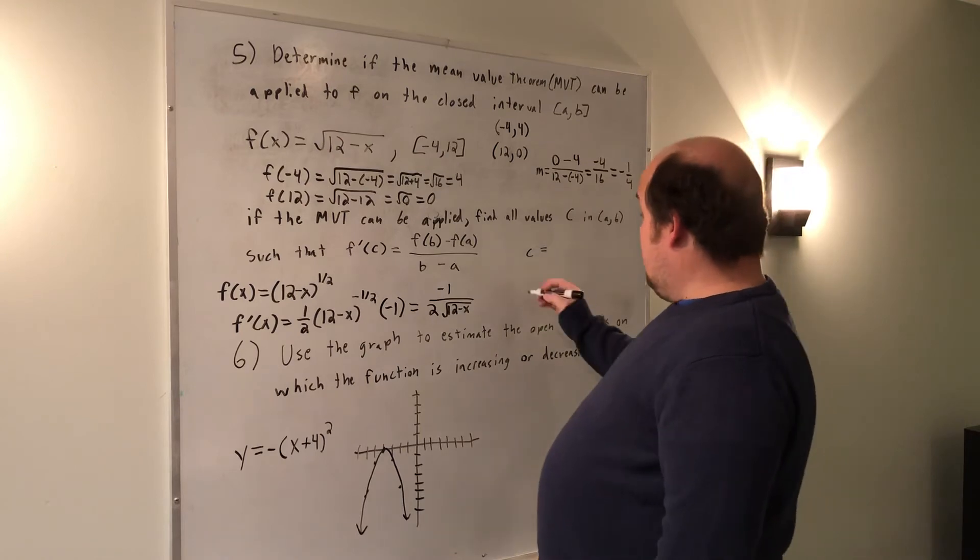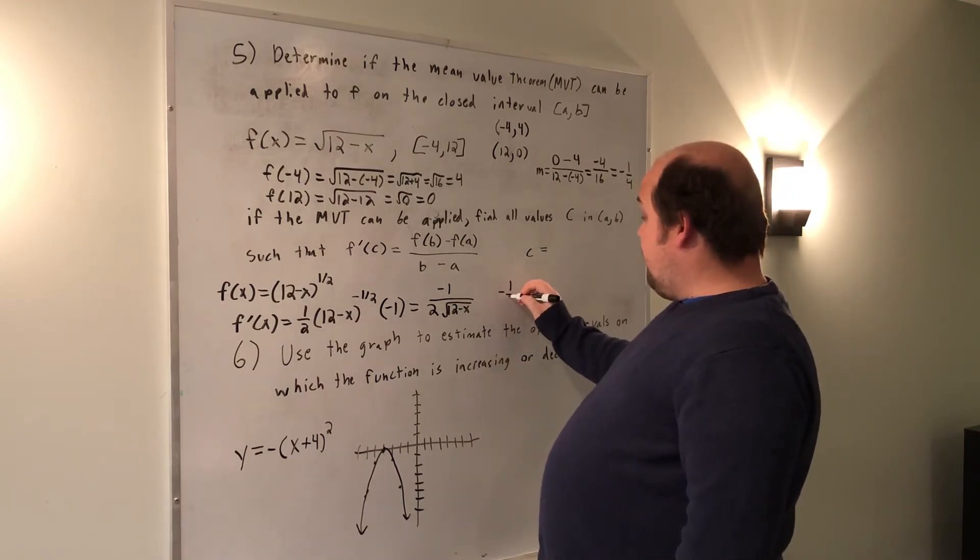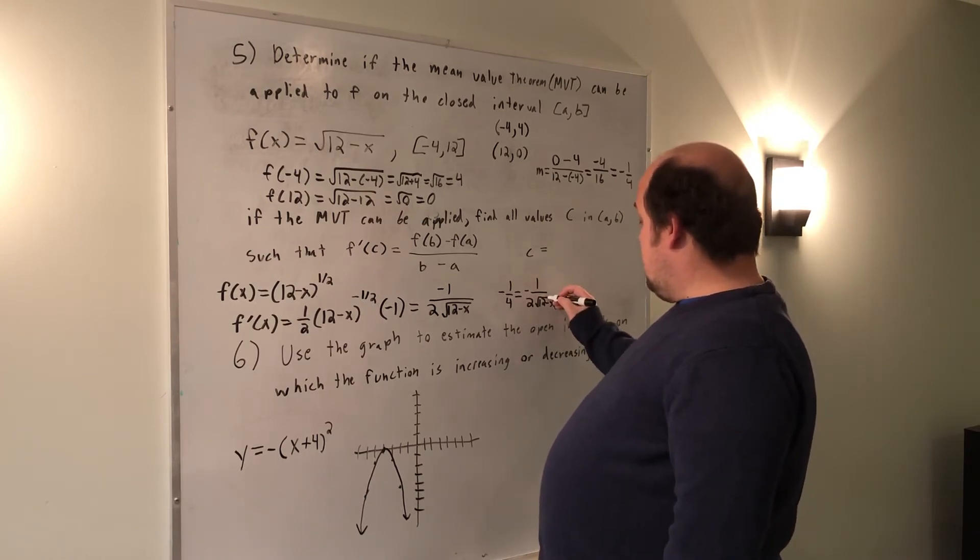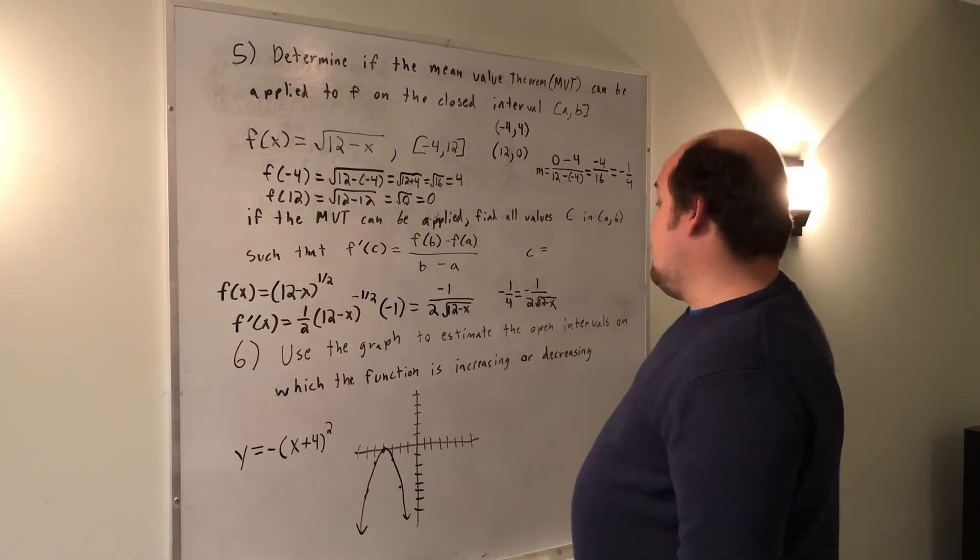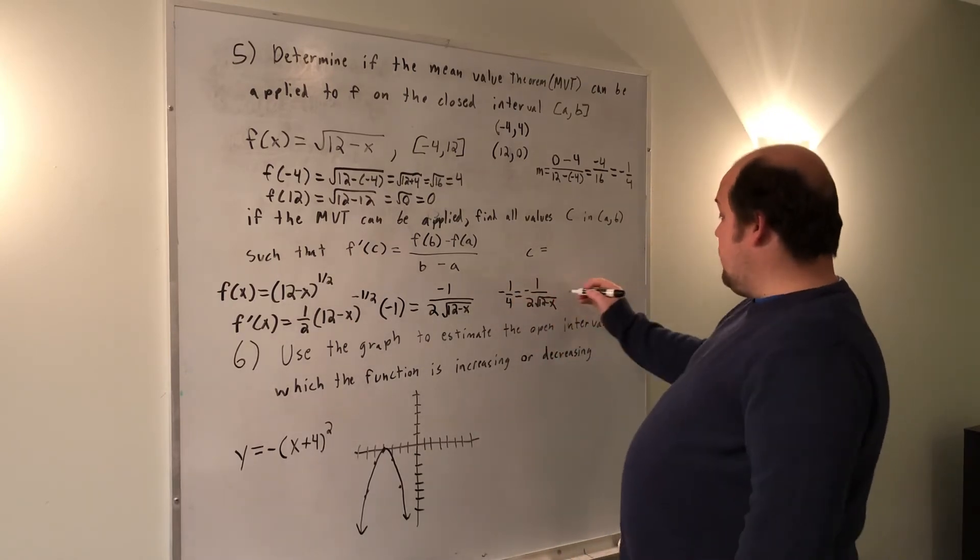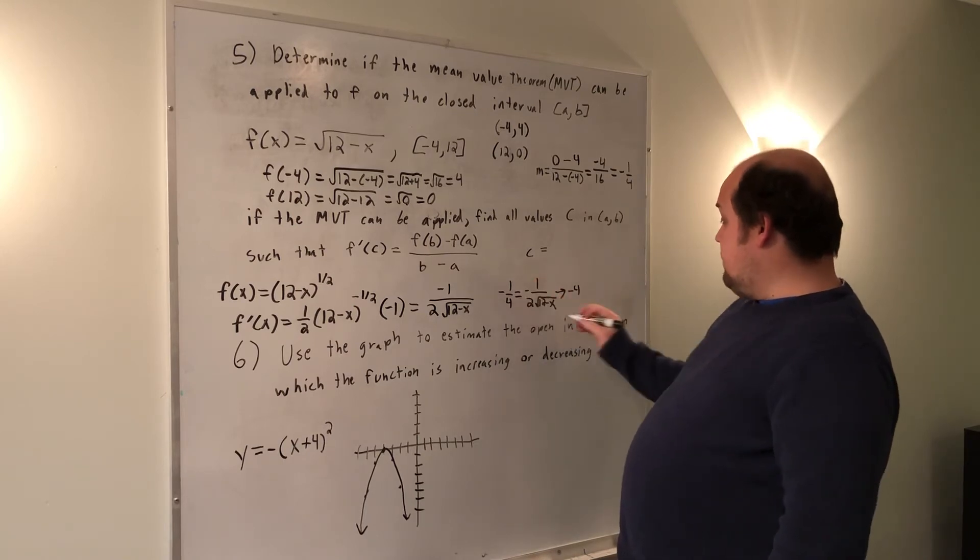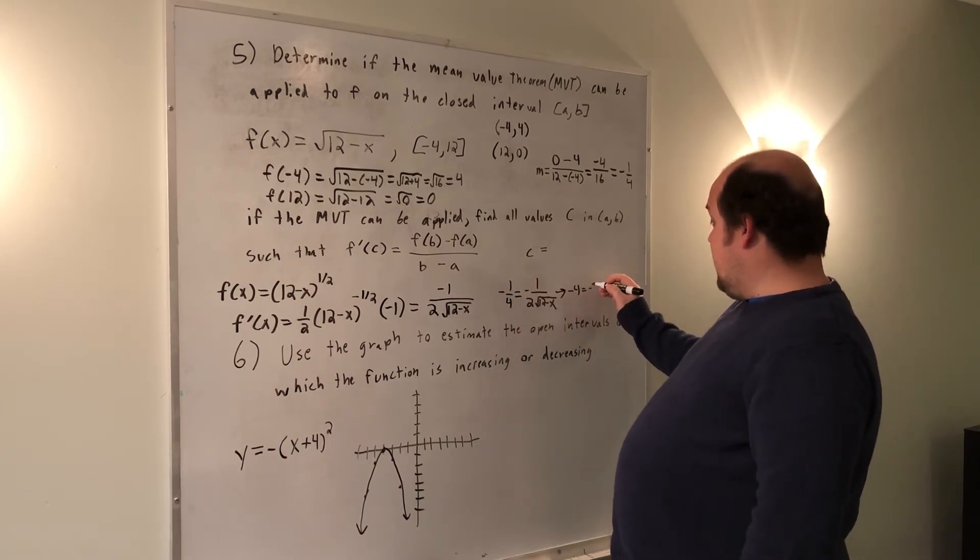I now need to set it equal to the slope that I found in the first part. So I get negative 1 fourth equals negative 1 over 2 times the root of 12 minus x. I'm going to cross multiply. So 4 times negative 1 gives me negative 4. This times negative 1 gives me negative 2 times the root of 12 minus x.